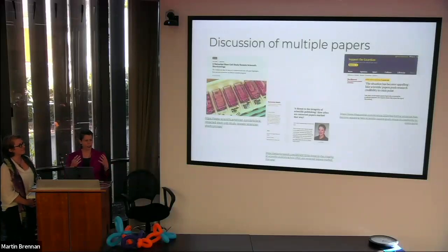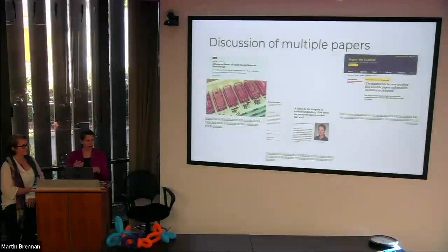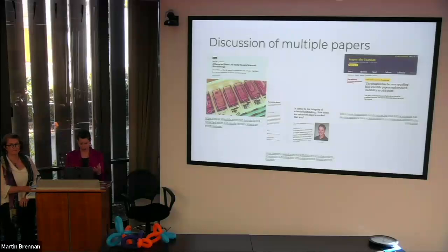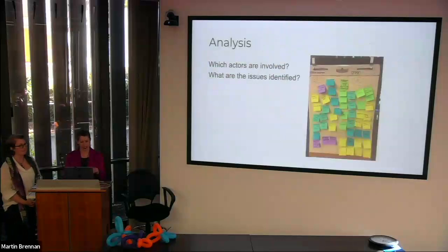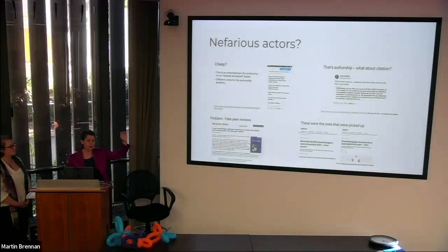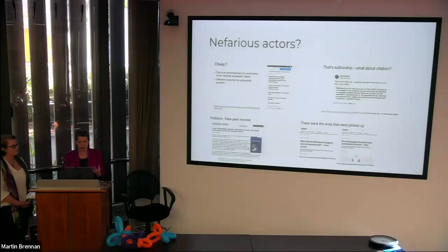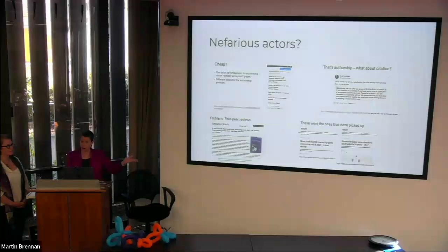First we looked at a series of articles about something bad that's happened in the research environment — gaming the system, gift authorship, peer review manipulation. We talked about who the actors are and what the issues are. Examples included: sale of authorship on an already-accepted paper where the further up the authorship list you go the more you pay; paying people to cite you; fake peer reviews; and retractions — which represent only the problems that have actually been noticed.